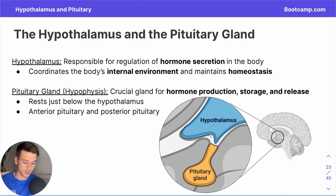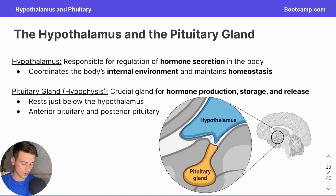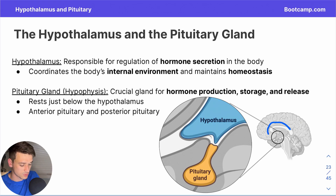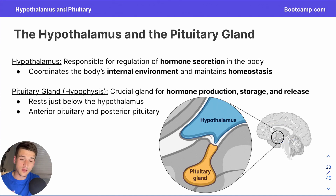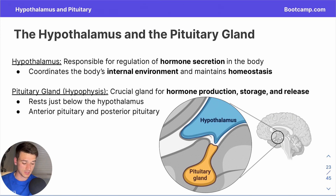Let's begin by talking more generally about the key structures at play here — the hypothalamus and the pituitary gland. The hypothalamus is part of the limbic system in the nervous system. It's a more centralized set of structures in the brain, with the hypothalamus existing right in the area shown in our visual. The hypothalamus has very important roles both in the nervous system and the endocrine system.